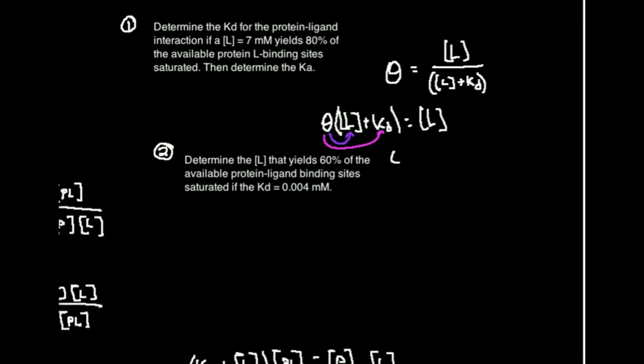So what I'm going to get is theta times the concentration of L plus theta times the Kd is equal to the concentration of L. Now one thing that's important here is remember L is a variable, so if there's no coefficient out in front of it, you assume the coefficient's just one. That's actually going to be important in just a minute.